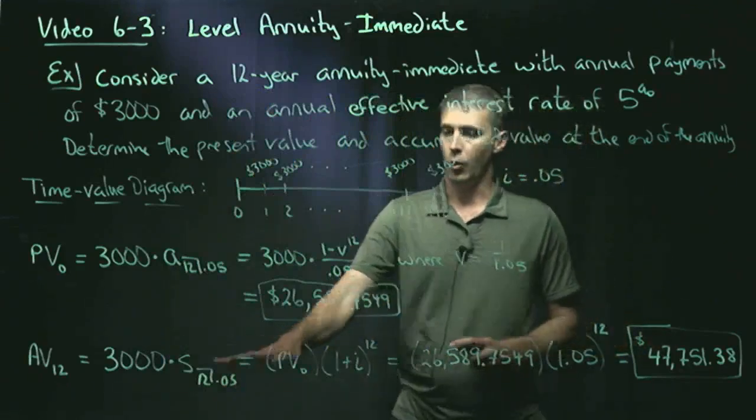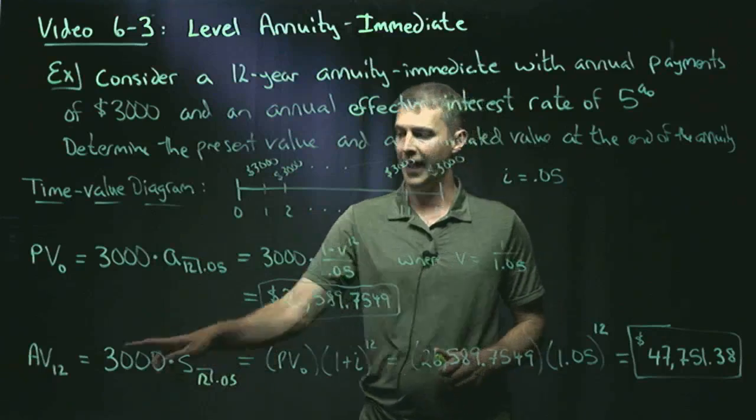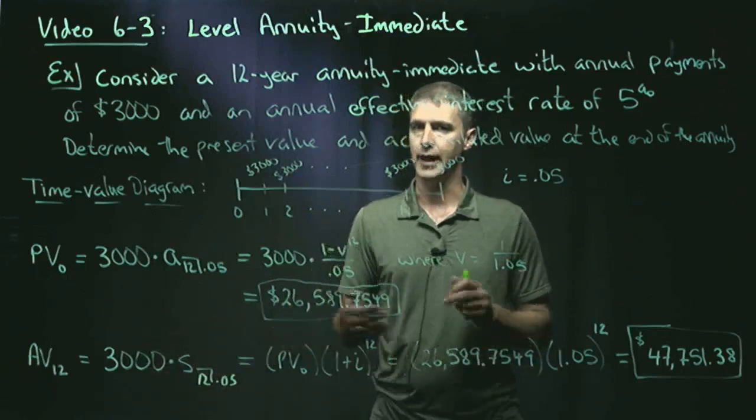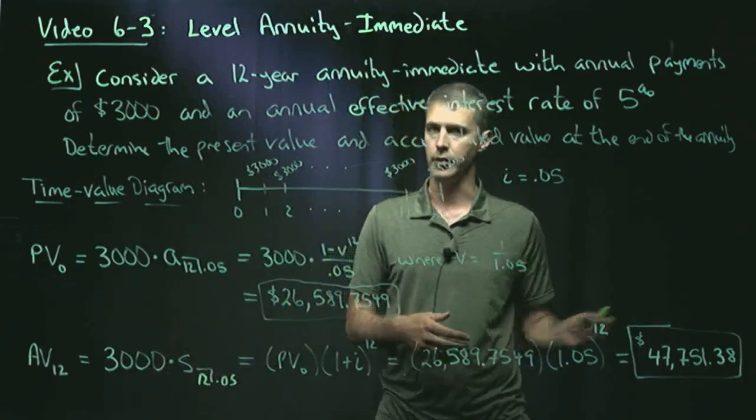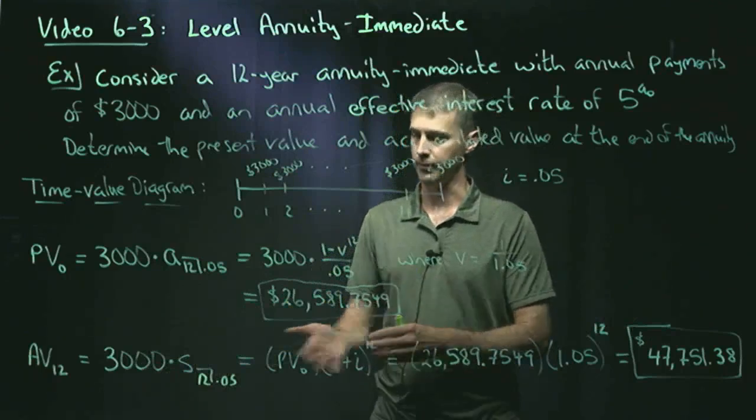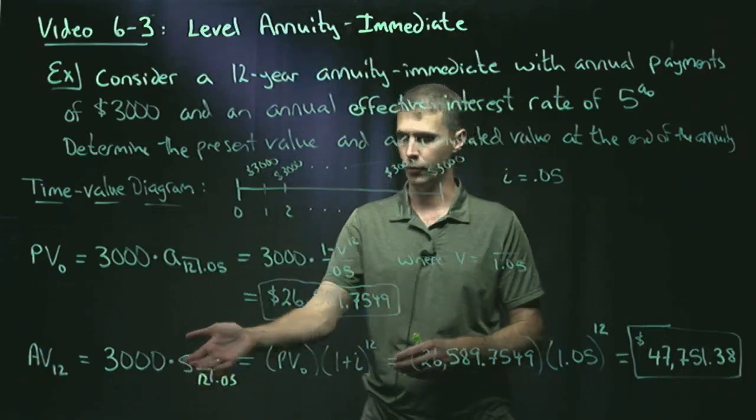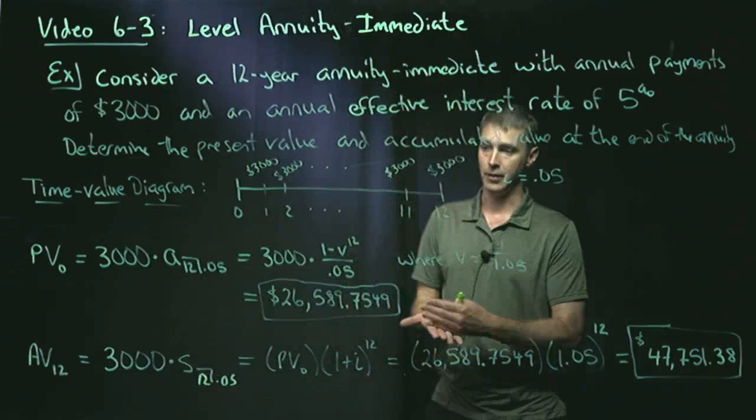And this formula only works if we're trying to figure out the value at the end of the annuity, not two years after the end of the annuity, just at the very end of the annuity. That notation is only for the value at the end of the annuity.